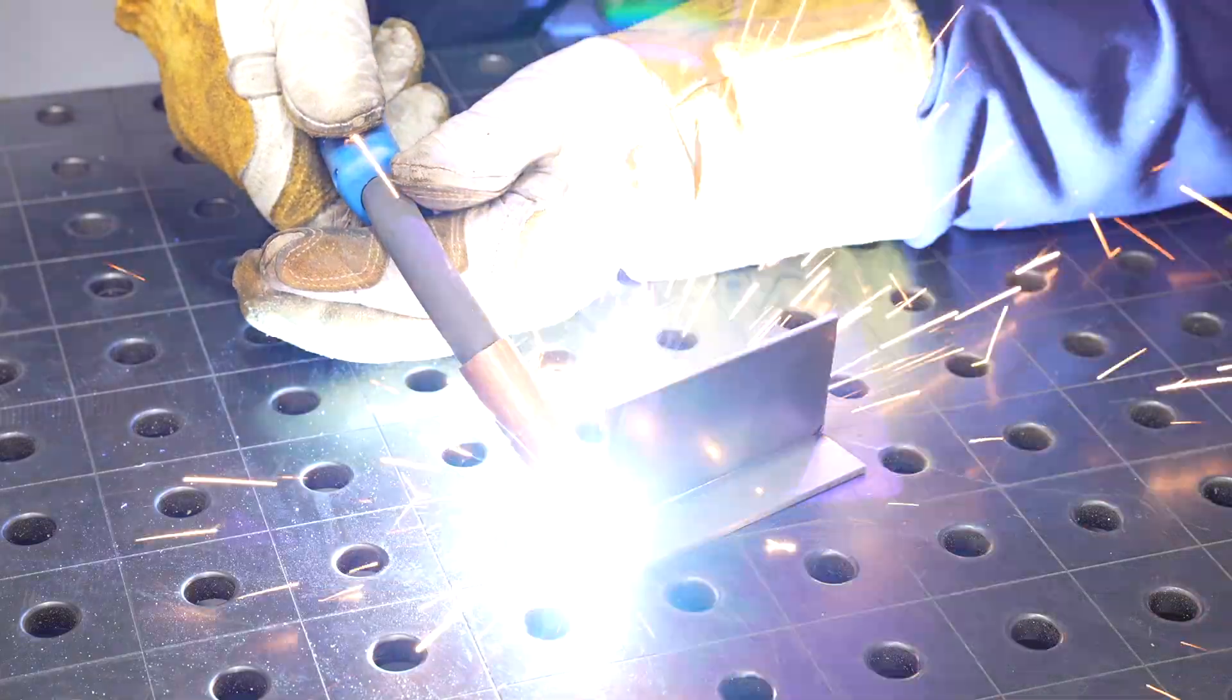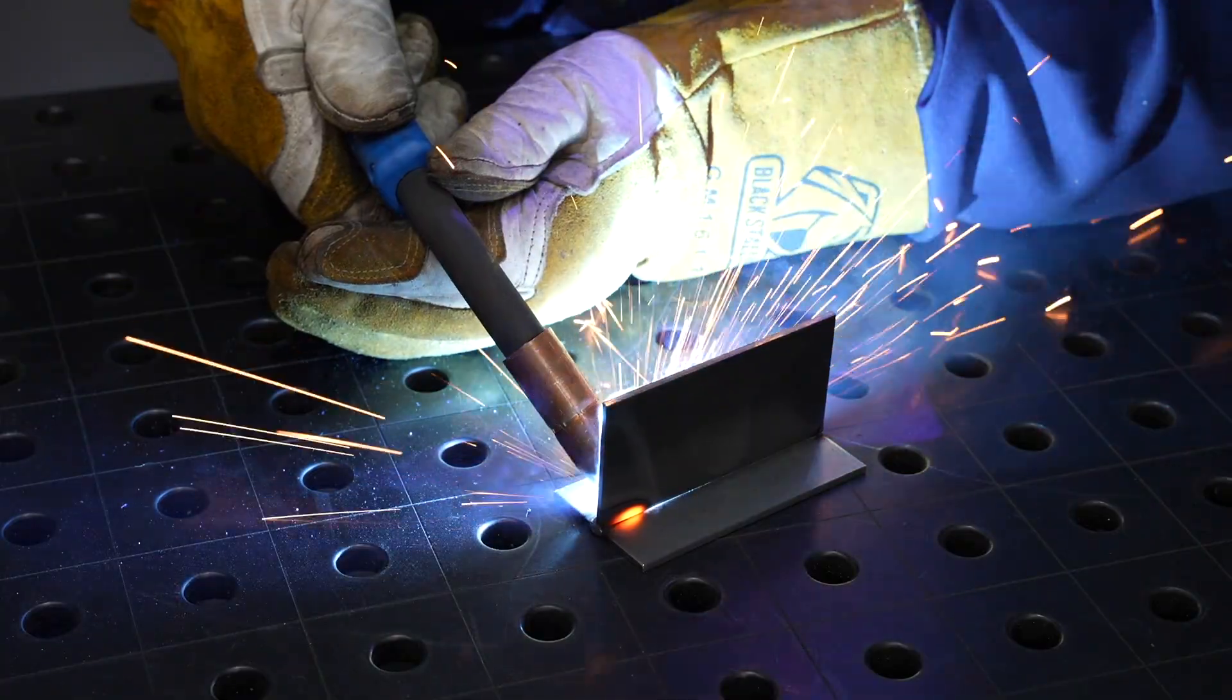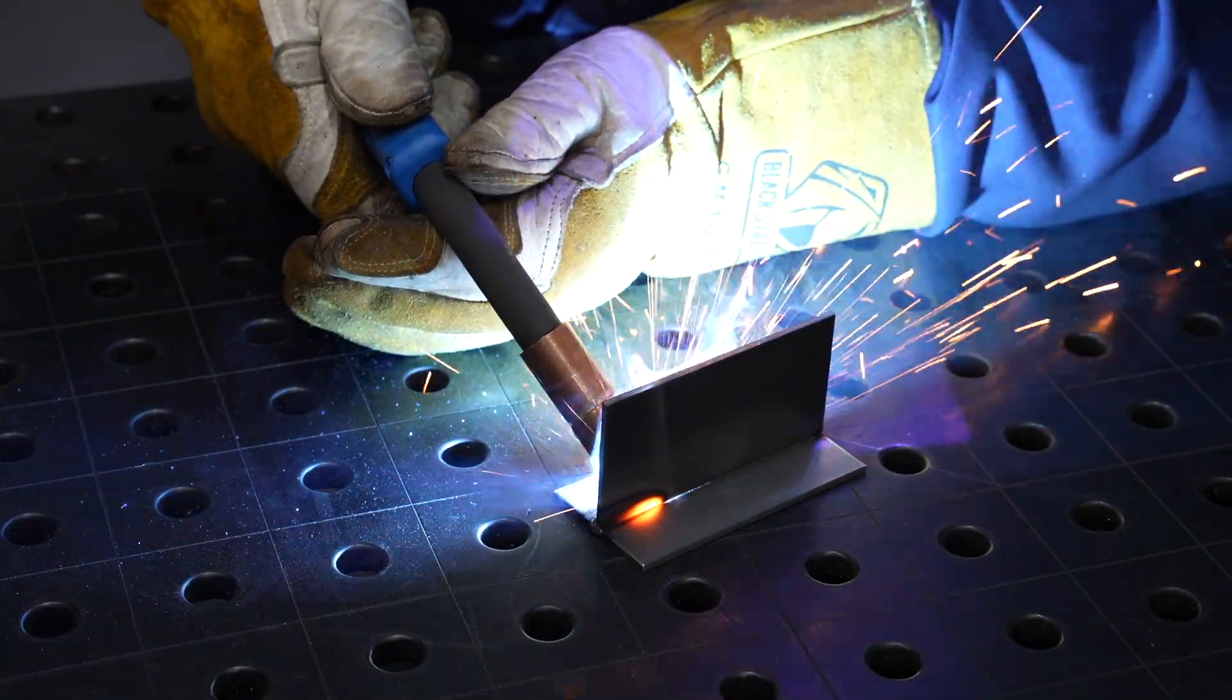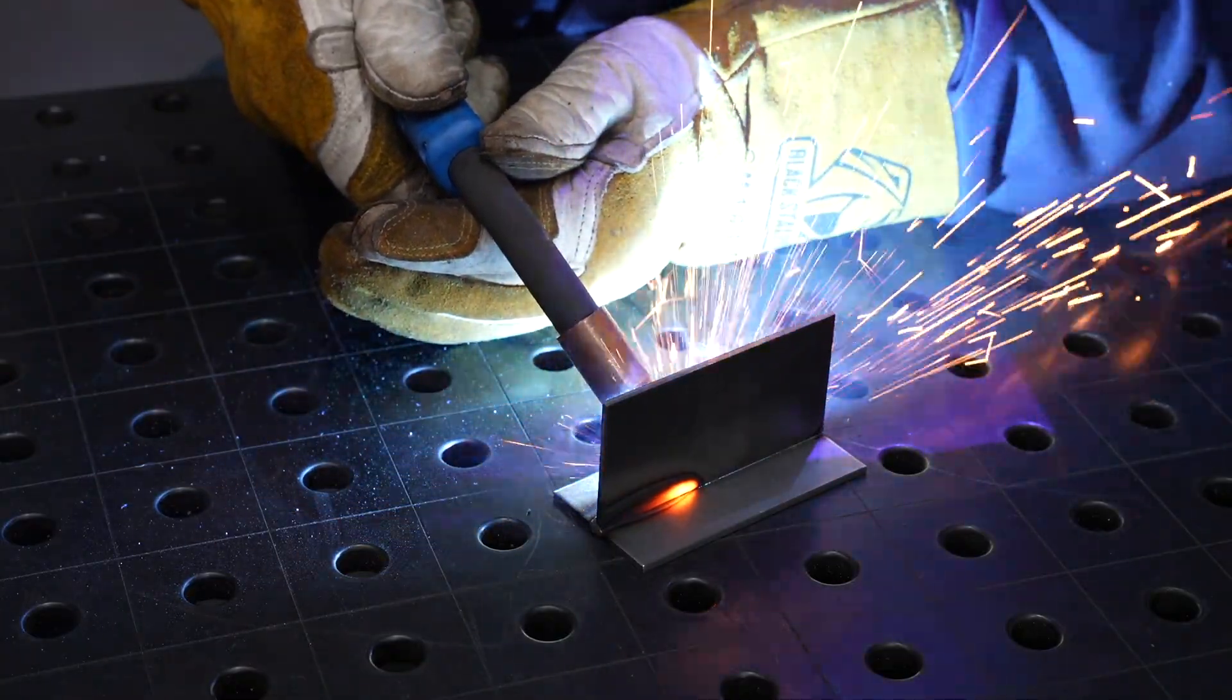Now let's look at some MIG welding which uses a gun like this and feeds wire out of the gun and the electric arc goes between the wire and the workpiece so it's melting all the time as it feeds in there.